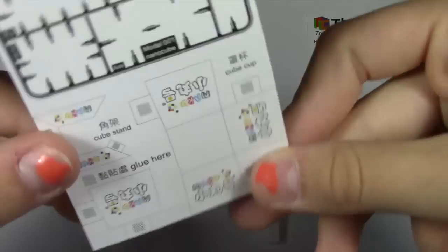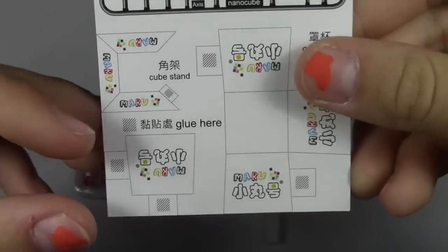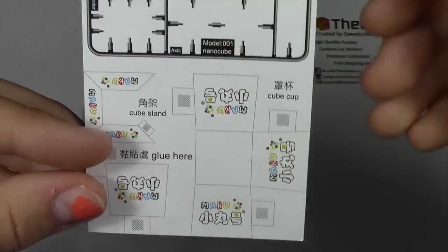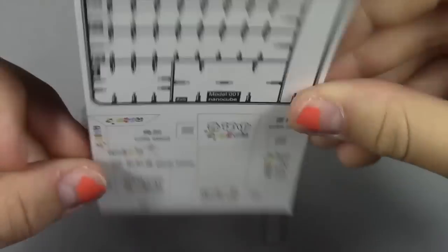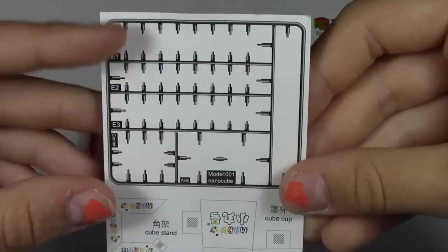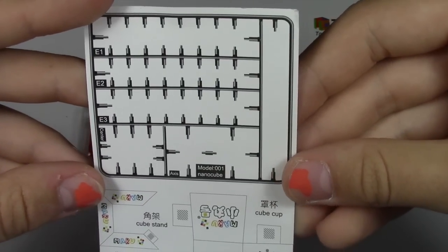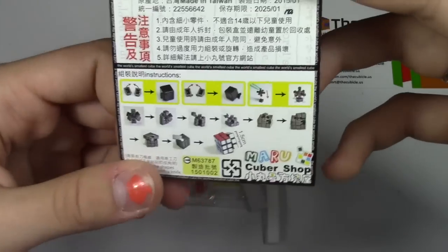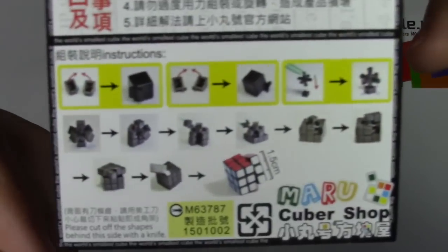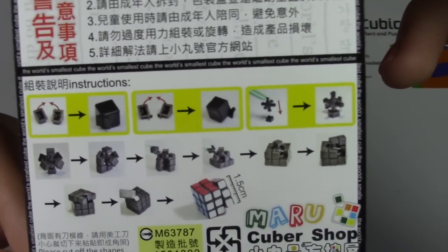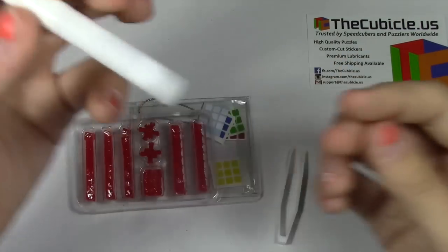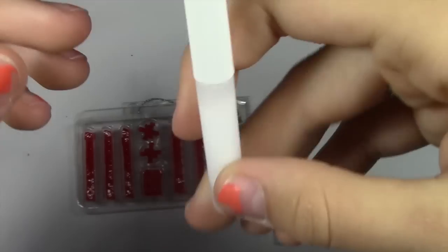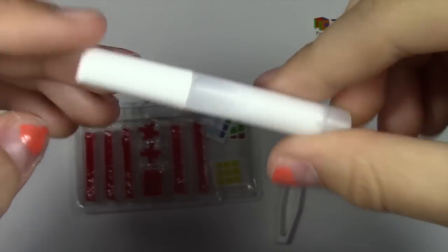So on this little sheet here it says cube stand. I'm assuming if I somehow figure out how to put this thing together it will turn into a cube stand. However, I'm not really sure if I'm going to do that. And then I have no idea what this is nor do I want to take the time to figure out what it is. And then here's just a diagram on what's going on.